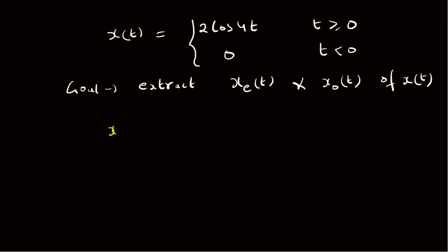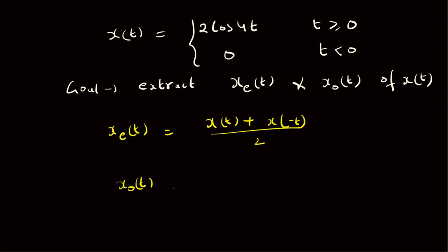To extract the even component, the expression x_e of t is given by x of t plus x of minus t, divided by 2. That is, the even component is basically the average of x of t and its reflection. Similarly, the odd component x_o of t is equal to x of t minus x of minus t divided by 2 — that is, half the difference between the signal and its reflection.